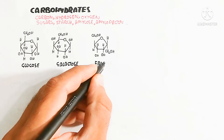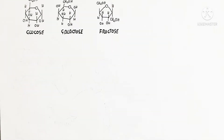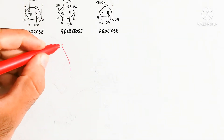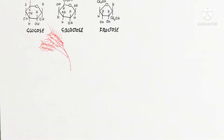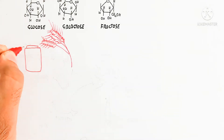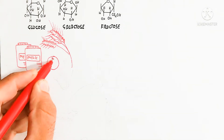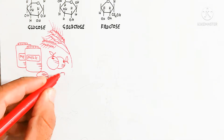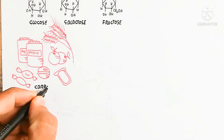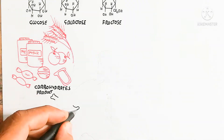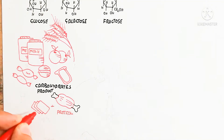Galactose and glucose differ in the hydroxyl group at carbon number 1. Wheat and milk contain galactose; toffee and bread contain amylopectin and amylose; and fruit contains fructose.